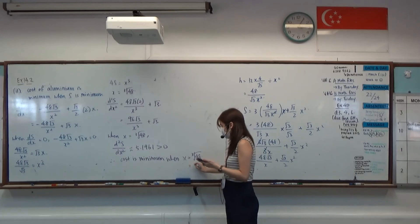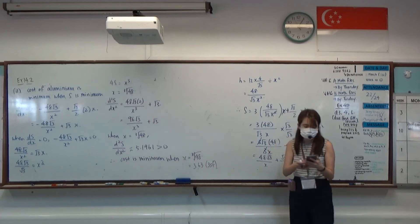So this value of X will allow us to get a stationary value. We still need to do second derivative test to prove it. Second derivative test tells us that second derivative is more than zero, so it will be a minimum value. Therefore cost is minimal when X equals to cube root of 48. If you want to write this as 3SF, that's also fine. Leaving it in exact form in this case is also okay.